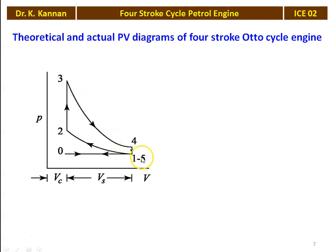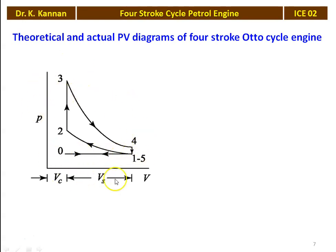From 4 to 5 is called blow down. When the piston is at position 4, the exhaust valve opens and there is a sudden pressure drop — that pressure drop is called the blow down process. When the piston is at position 5, it moves from the bottom dead center to the top dead center and the burnt gas is led to the atmosphere. The piston then returns to top dead center and the cycle is repeated. This is the theoretical P-V diagram of the Otto cycle or petrol engine.